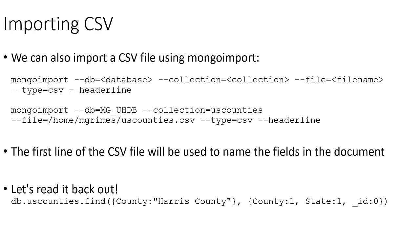Finally, we can also use the mongoimport command to import a CSV file. It's very similar to importing a JSON file: mongoimport --db with the database name, --collection with the collection name, --file with the CSV filename — so far exactly like a JSON import — except now we add --type=csv for comma-separated values, and --headerline, which tells mongoimport that the first line in the CSV file describes the attribute names.